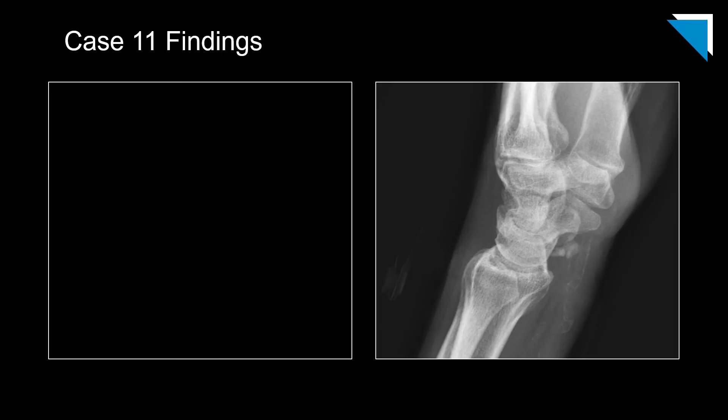Our next case is a 60-year-old man with pain. This is a lateral plain radiograph of the wrist demonstrating scattered degenerative changes and dense vascular calcifications, but also some amorphous radio-opacities along the volar aspect of the wrist just proximal to the pisiform. This is consistent with hydroxyapatite deposition.